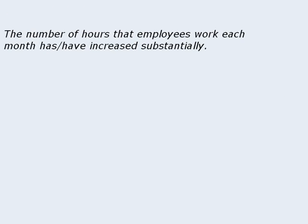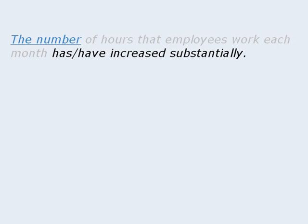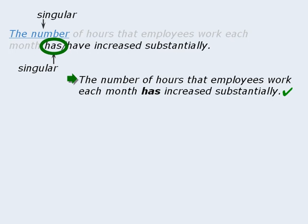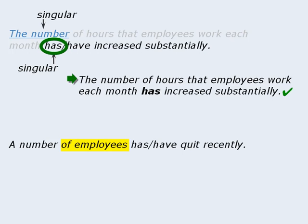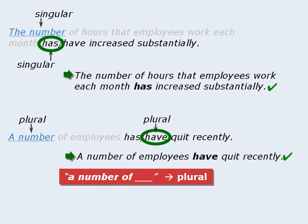Here's another one for you to try. If we eliminate the prepositional phrase 'of hours that employees work each month,' it is clear that the subject is 'the number.' Since this is singular, it requires the singular verb 'has': the number of hours that employees work each month has increased substantially. Now compare that with: a number of employees have quit recently. In this case, 'a number of' creates a plural subject, which requires the plural verb 'have.' So to summarize: 'the number of' is singular, and 'a number of' is plural.